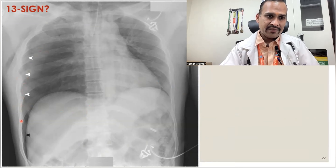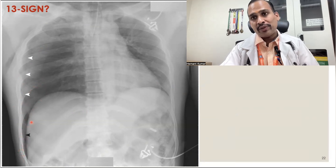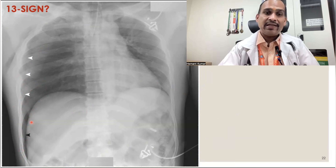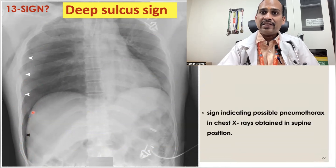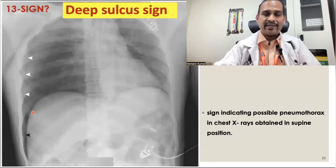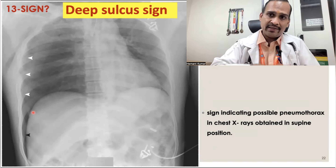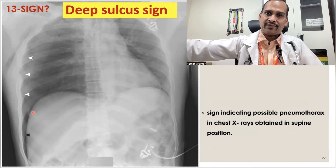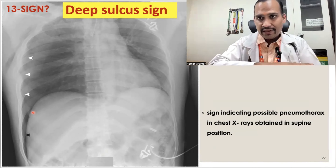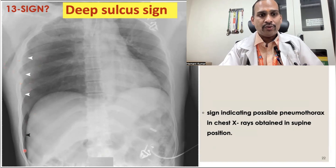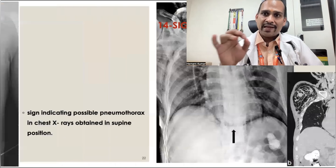Sign 13 is the deep sulcus sign — one of the most commonly asked questions in your exam. You can see the costophrenic angle is unusually sharp and deep. It is seen in pneumothorax, especially when the patient is in the ICU and the X-ray is taken in a supine position. In erect position, air goes upward, but when the patient is lying down, air goes downward, producing this deep sulcus sign.